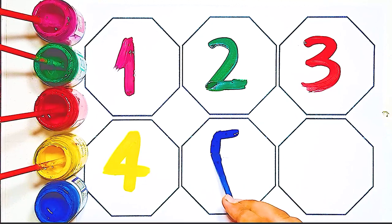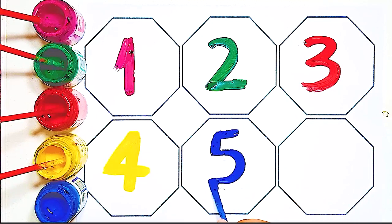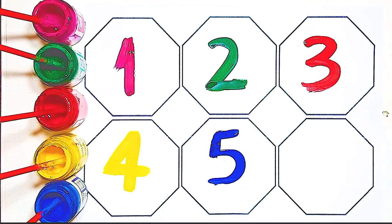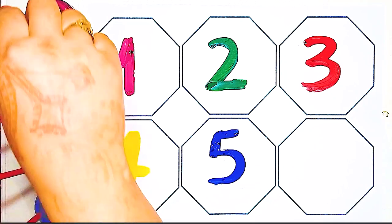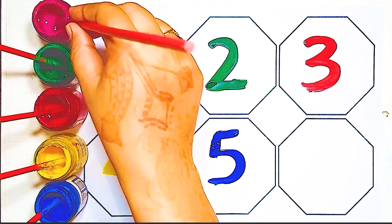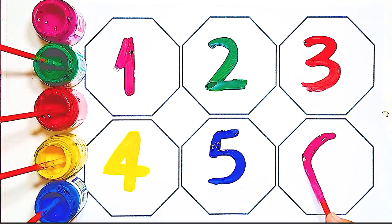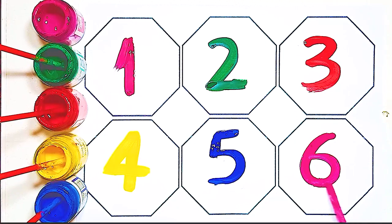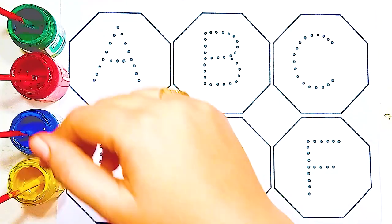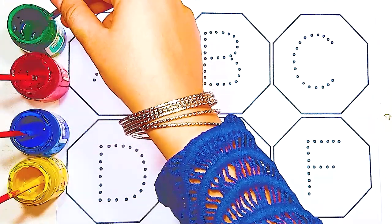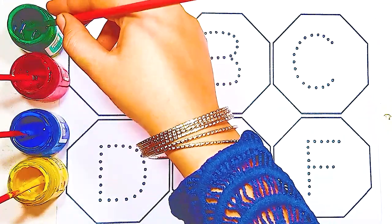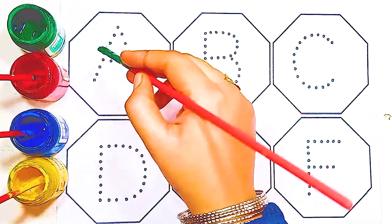A, B, C, D, E, F, G, H, I, J, K, L, M, N, O, P, Q, R, S, T, U, V, W, X, Y, and Z. Now I know my ABCs, next time won't you sing with me?